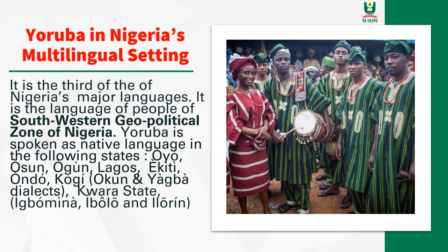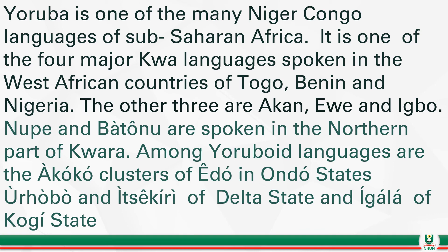Yoruba is one of the many Niger-Congo languages of sub-Saharan Africa. It is one of the four major Kwa languages spoken in West African countries, including Togo, Benin Republic, and Nigeria. The four are Yoruba, Akan, Ewe, and Igbo. Among Yoruba language variants are the Akoko cluster of Edo, variants in Ondo states, Yoruba-Itsekiri of Delta State, and Igala in Kogi state.